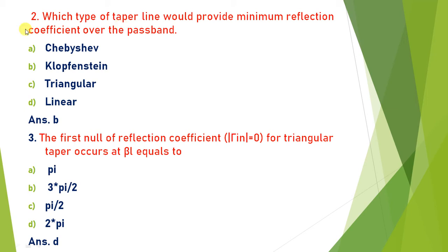Next question: which type of tapered line provides minimum reflection coefficient over the passband? The four options are Chebyshev, Klopfenstein, triangular, and linear tapers. Only the Klopfenstein transformer has the characteristic of minimum attenuation — or minimum reflection coefficient — over the passband. So the answer is (b) Klopfenstein taper.